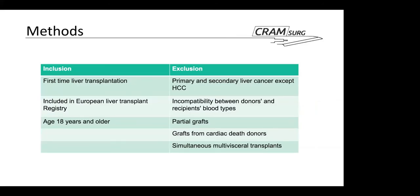Regarding inclusion and exclusion criteria: first-time liver transplant recipients included in the European Liver Transplant Registry, aged 18 and above, were included. Interestingly, patients who had a primary or secondary liver cancer were not included, but patients who had hepatocellular carcinoma were — a slight deviation from the original study which did not include any cancer patients. Other exclusion criteria were patients who received incompatible blood types, those who had a partial graft, those with grafts from cardiac death donors, and those who had a simultaneous transplant of another organ.